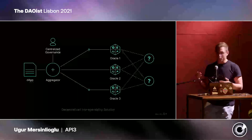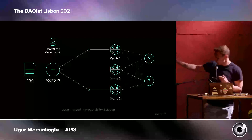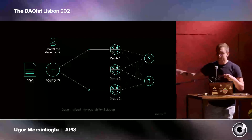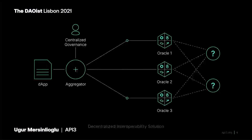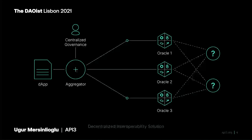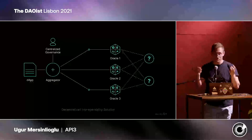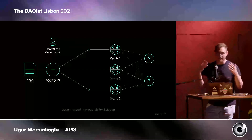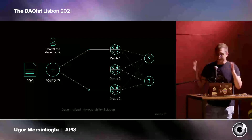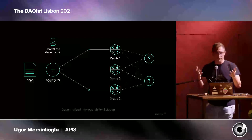How this is typically done nowadays is through such a structure. We have Oracle nodes on the right side that are responsible for retrieving the data from the real world and bringing it on chain. We have another entity on the left side that is responsible for setting up an aggregation contract, because you want the median of the responses, that then gets fed into the application that consumes it — the Bitcoin price, the weather in Lisbon today, or any other data you can imagine. This setup was very groundbreaking and enabled a lot of use cases.